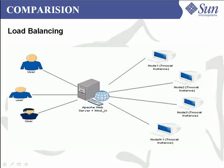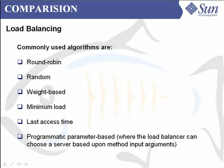There are many different algorithms to define the load distribution policy, ranging from a simple round robin algorithm to more sophisticated algorithms used to perform load balancing. Some of the commonly used algorithms are round robin, random, weight-based, minimum load, last access time, and programmatic parameter base.